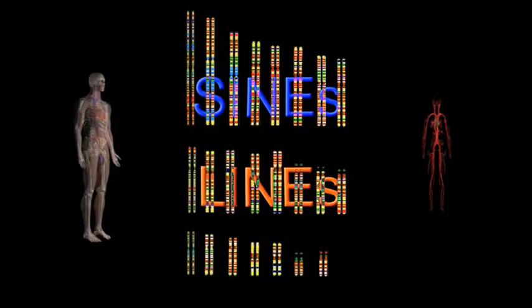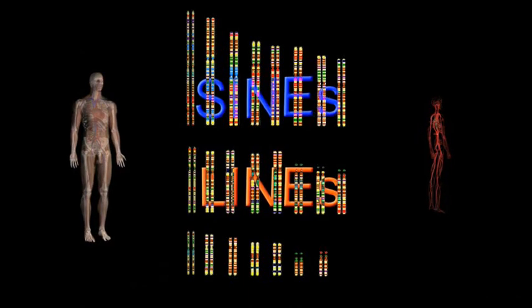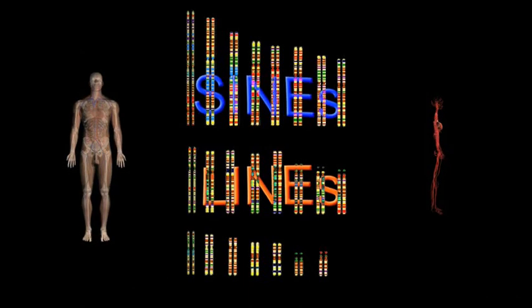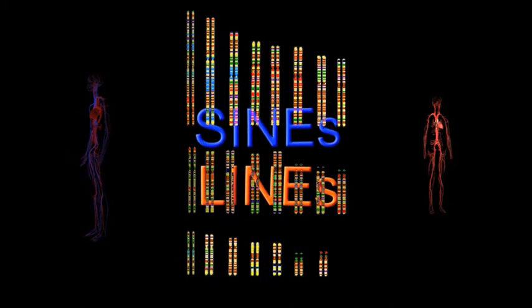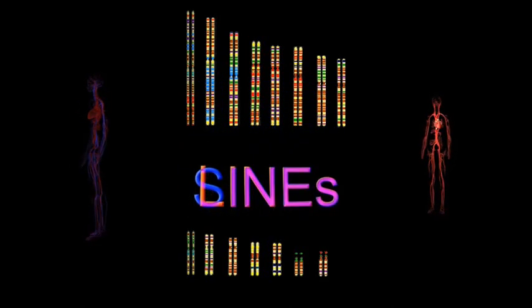There are about 850,000 LINEs and 1.5 million SINEs scattered throughout your genome, accounting for nearly 30% of the entire sequence.